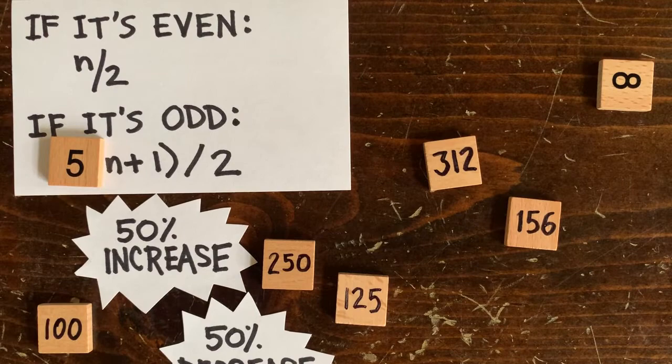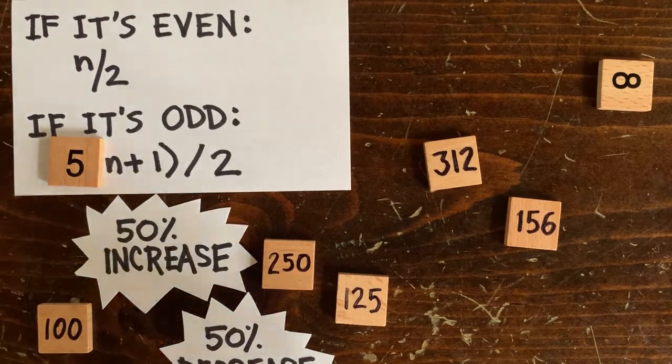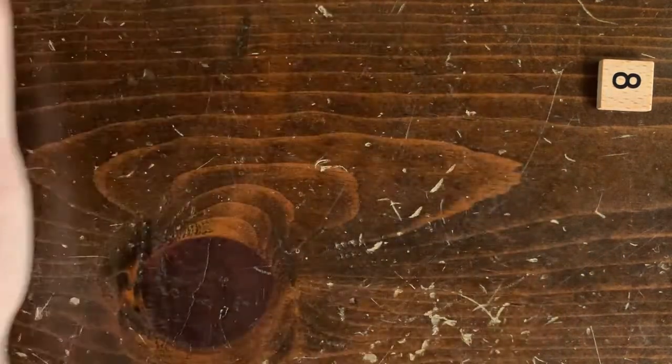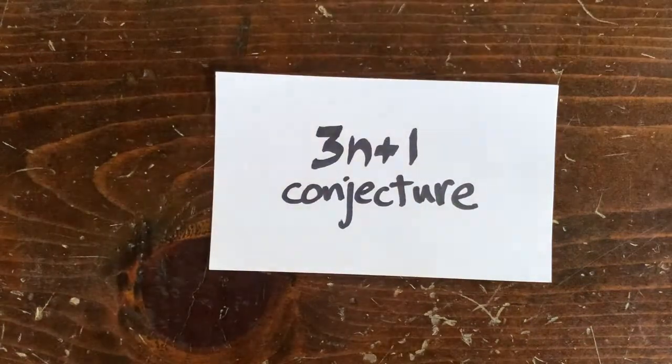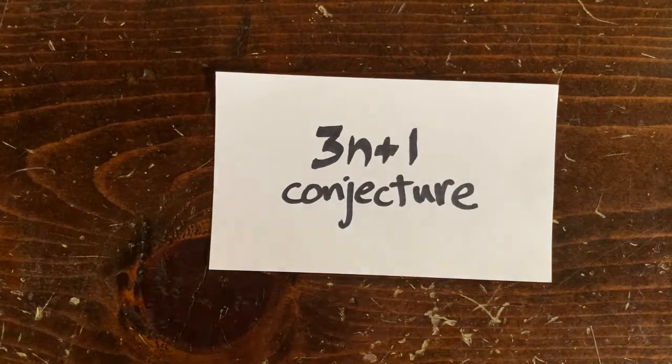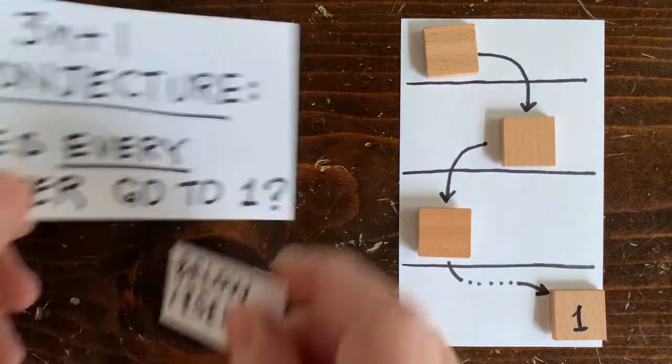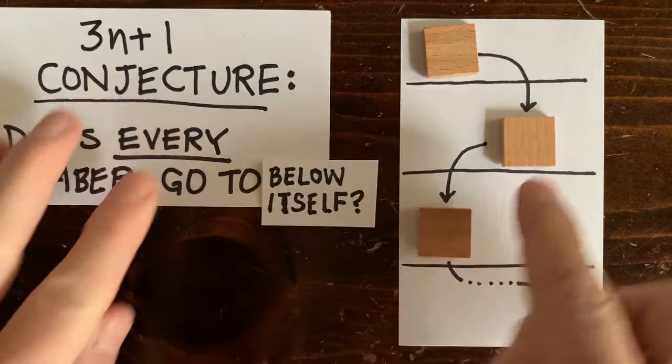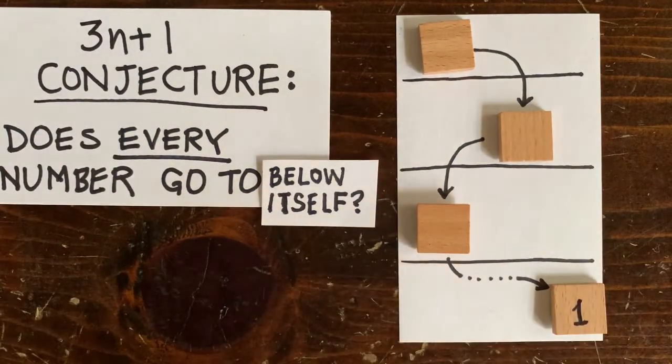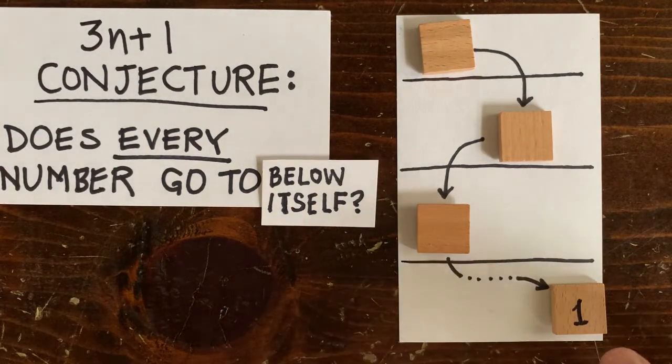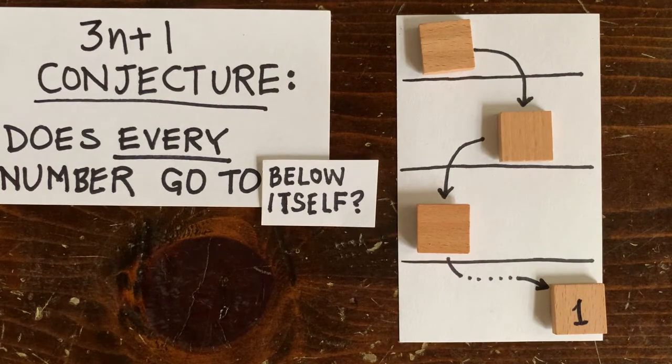Okay, let's go back to the 3n plus 1 problem. Instead of proving that every number eventually goes to 1, let's try proving something easier, that every number eventually goes below itself. If every number eventually goes below itself, then whatever it lands on will also go below itself, and so on. So actually every number would have to go to 1, and we'd have solved the whole 3n plus 1 conjecture.